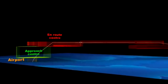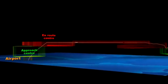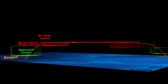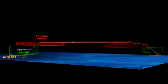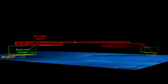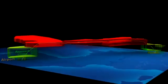En route controllers deal with aircraft at cruising altitude, approach controllers when the flight is inbound or outbound, and airport controllers for landing and take-off. The en route centres can cover a wide geographical area.